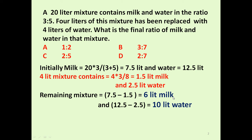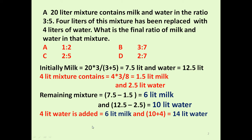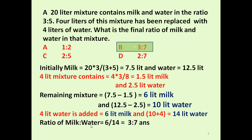Now 4 litres of water is added to this mixture. The milk remains the same at 6 litres, and water becomes 10 plus 4, which equals 14 litres. So the final ratio of milk to water is 6 to 14, which simplifies to 3 is to 7. The answer is option B: 3 is to 7.